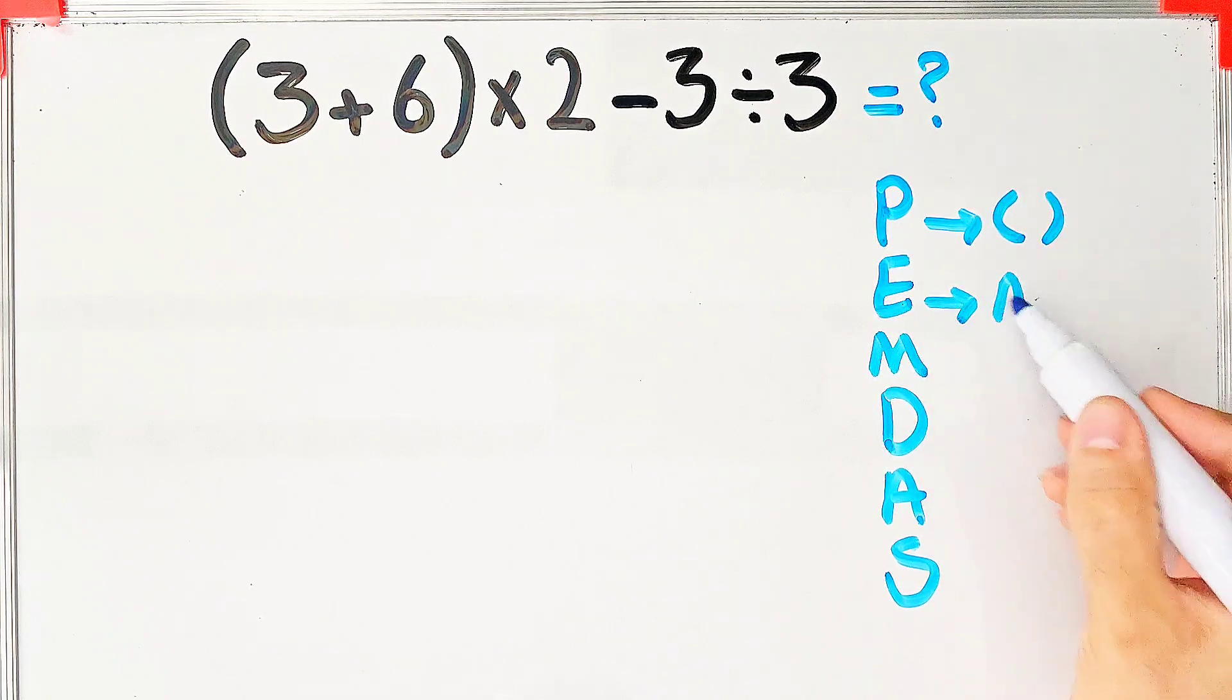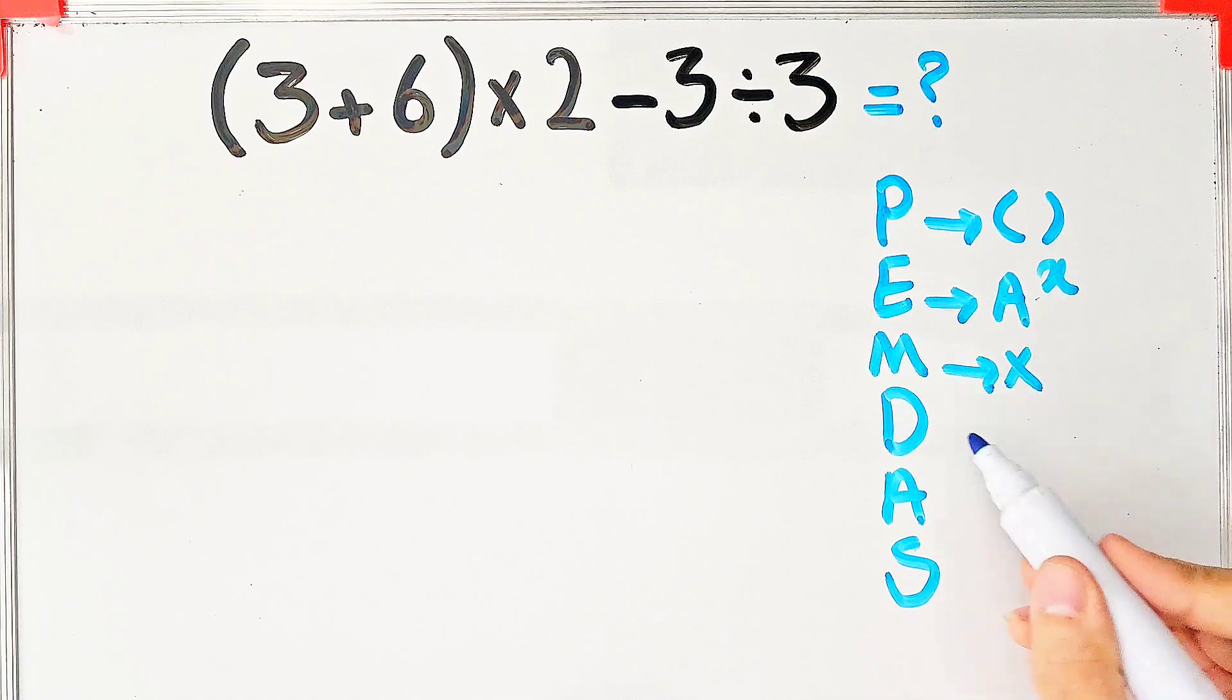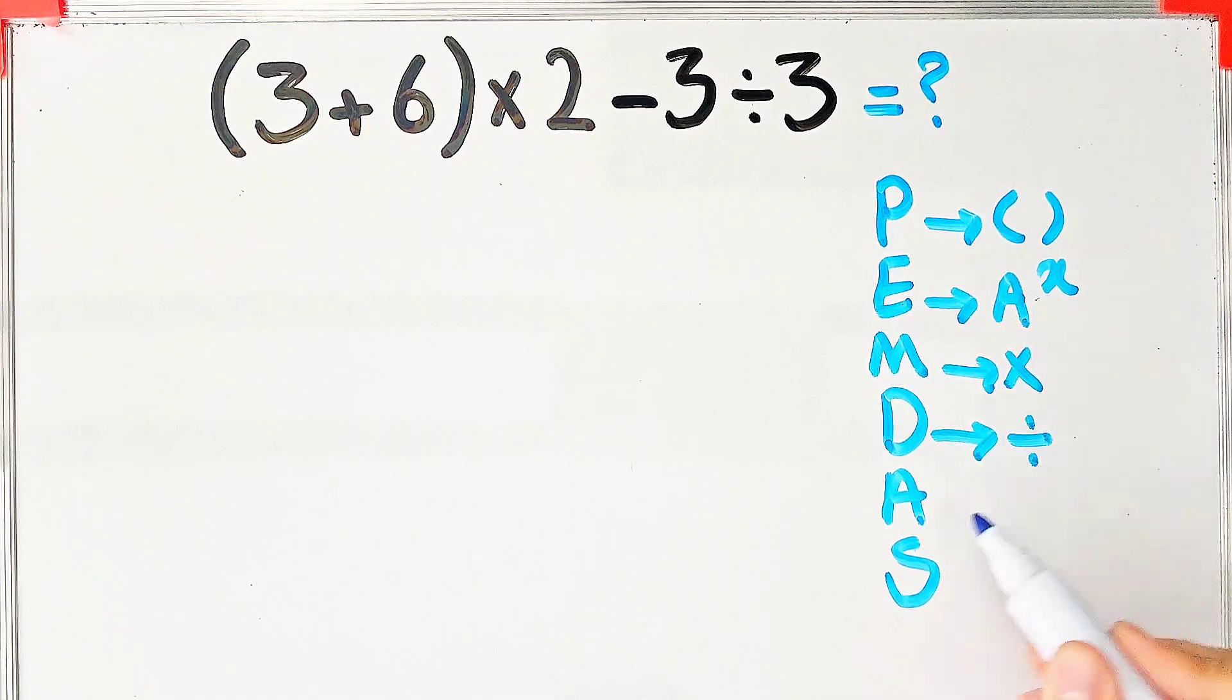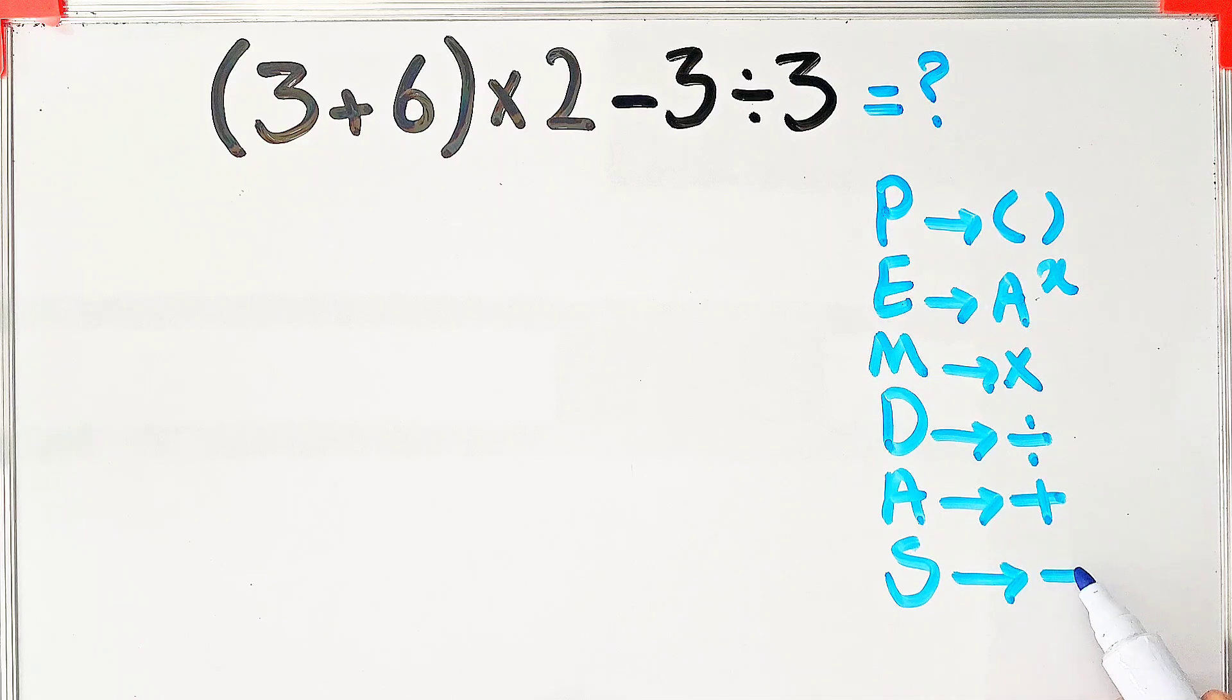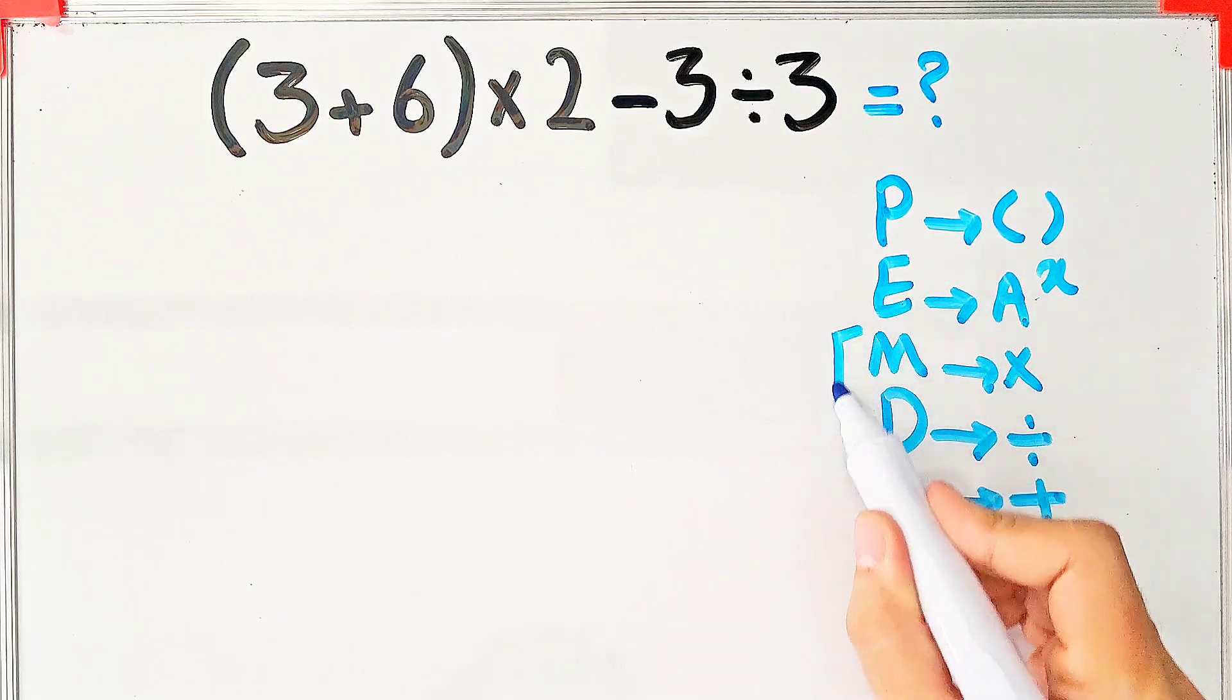E stands for exponent, M stands for multiplication, D stands for division, A stands for addition, and S stands for subtraction. Multiplication and division have the same level of priority. Also, addition and subtraction have the same priority.